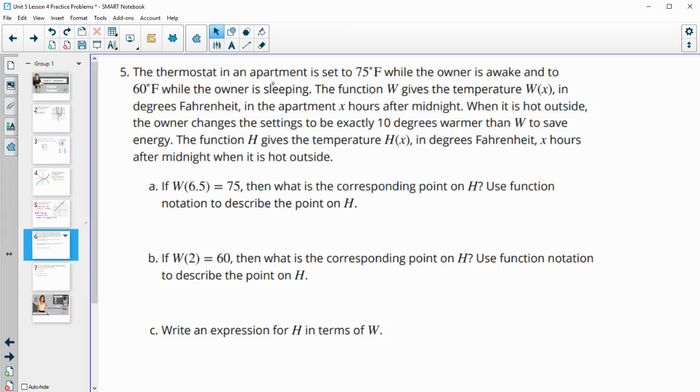All right, number five. The thermostat in an apartment is set to 75 degrees while the owner is awake and to 60 while the owner sleeps. The function W gives the temperature in degrees Fahrenheit in the apartment X hours after midnight. When it is hot outside, the owner changes the setting to be exactly 10 degrees warmer than W, than what she had it set before to save energy. The function H gives the temperature in degrees Fahrenheit X hours after midnight when it's hot outside.